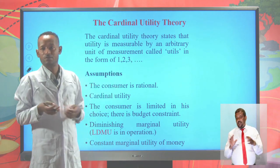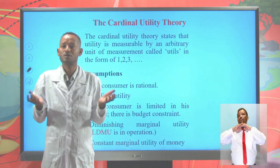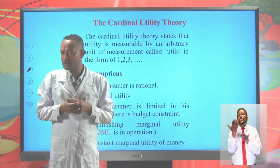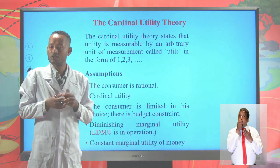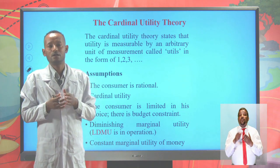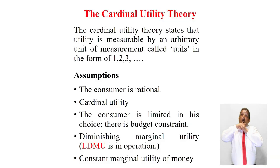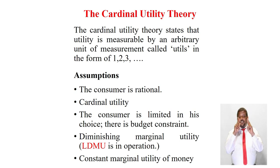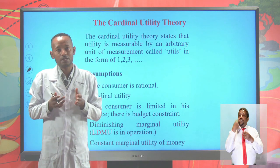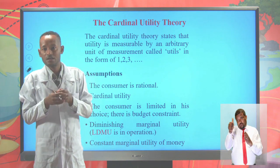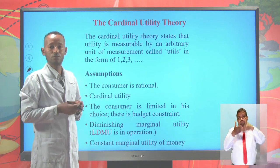It is possible to attach numbers to the satisfaction we derive from consumption of goods and services. The cardinal utility theory is a theory proposed by the old economists. The ordinal utility theory states that utility is not measurable. Rather, a consumer can rank or order the satisfaction derived from consumption of goods and services.